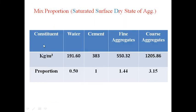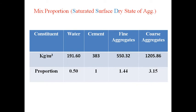The mix proportion in saturated surface dry state is: water = 191.6 kg/m³, cement = 383 kg/m³, fine aggregates = 550.32 kg/m³, coarse aggregates = 1205.86 kg/m³. Converting to proportion: water-cement ratio = 0.5, cement = 1, fine aggregate = 1.44, coarse aggregate = 3.15.